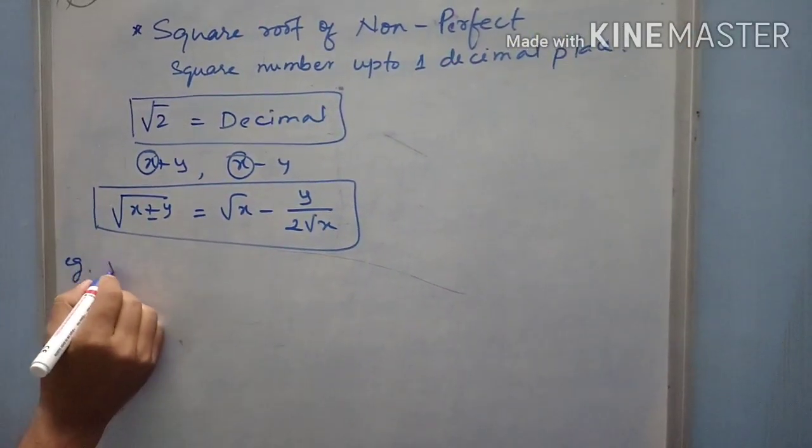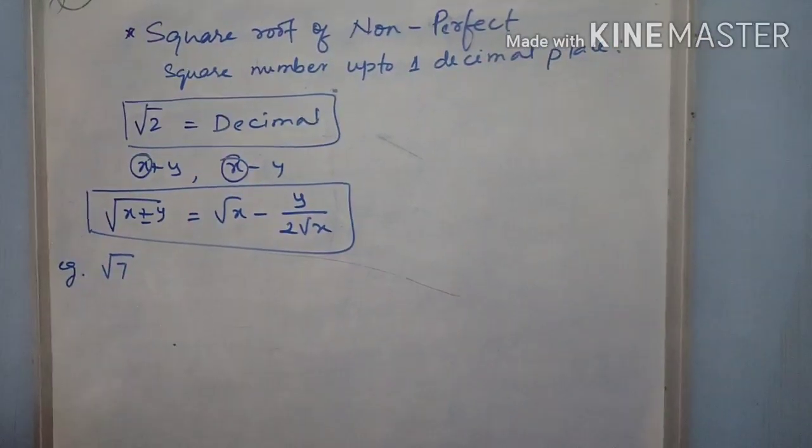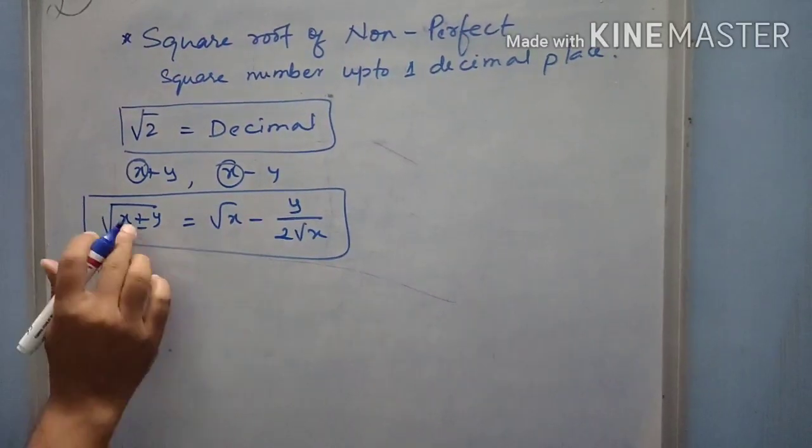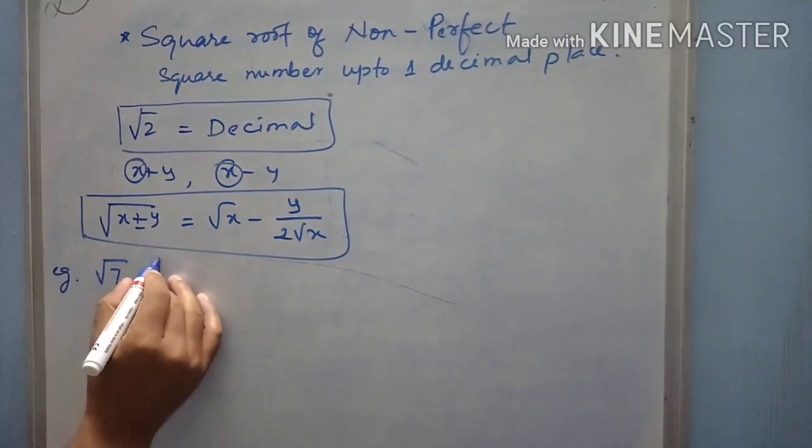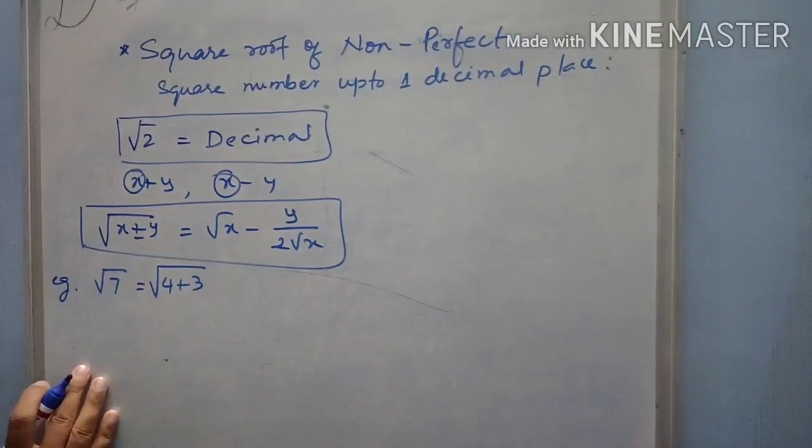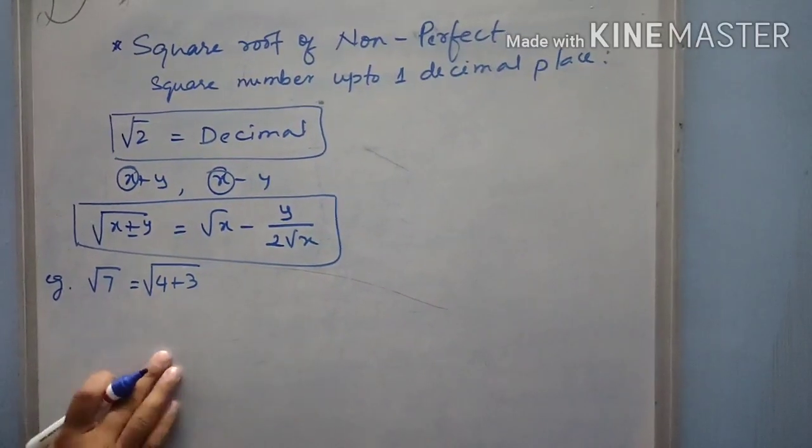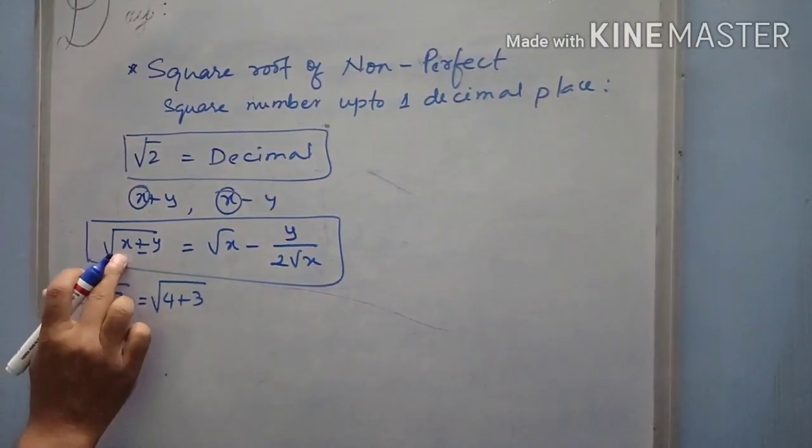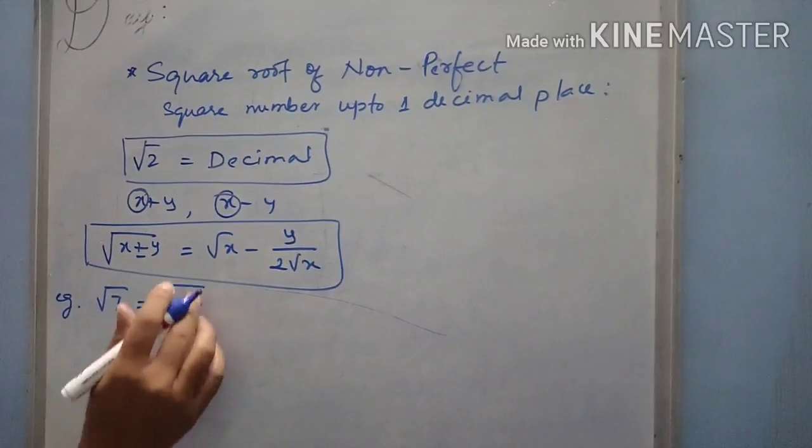Example, square root of 7. I want to find the square root of 7. So, 7 can be written as, first I will do in the form of plus, 7 can be written as 4 plus 3. Why I am writing in this way? 4 is a square number. First number should be square number. Then, it is in the form of x plus y now. Apply the formula.